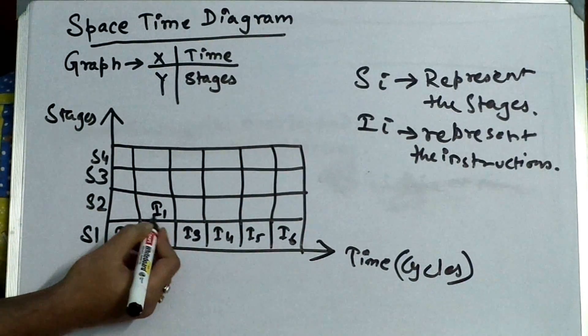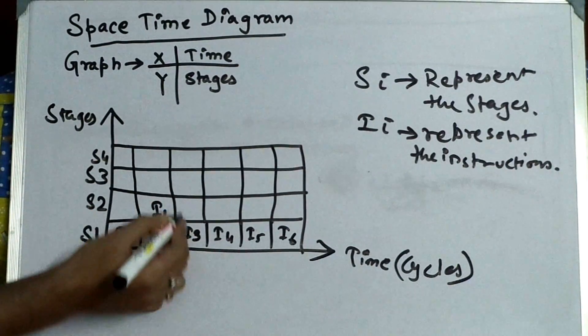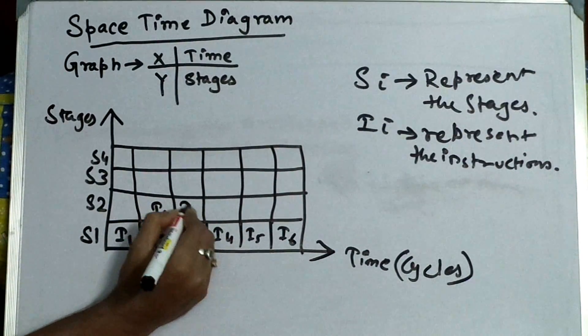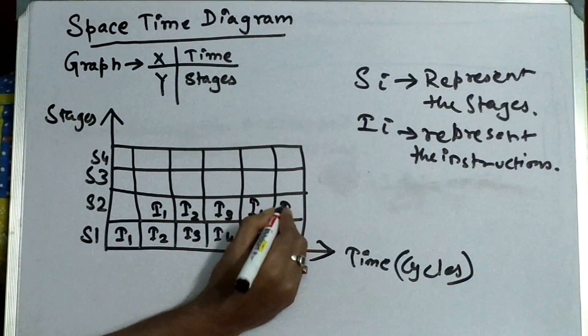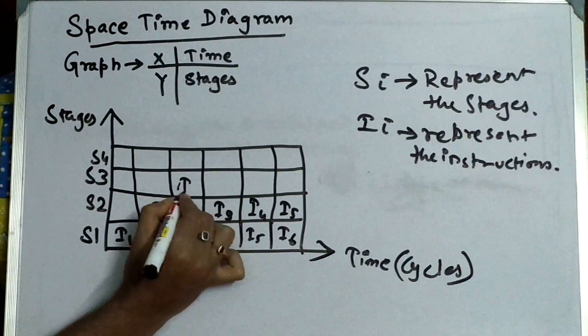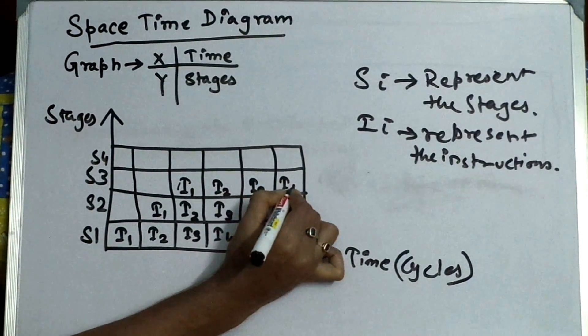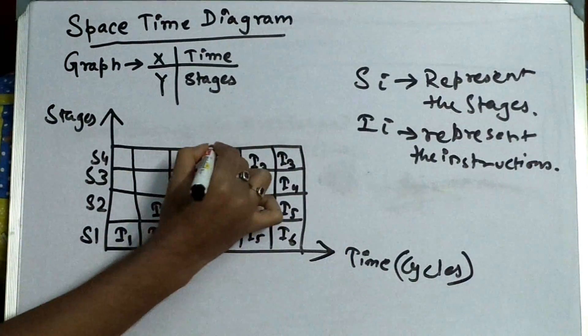So to avoid the idle cases, we are giving I1 in the second stage, means second option of this S2 stage. So like this it will go on: I1, I2, I3, I4, I5, now again I1, I2, I3, I4, and I1, I2, I3.